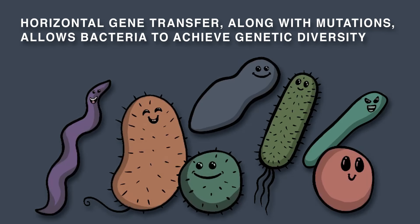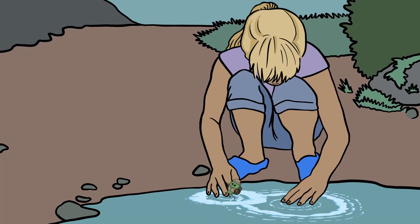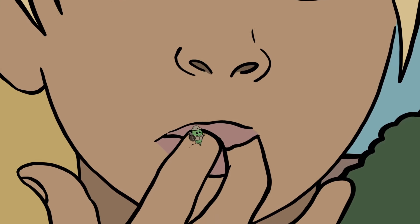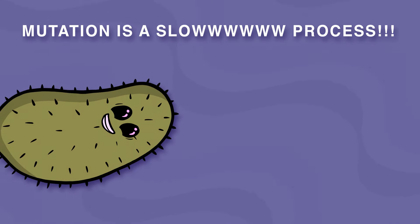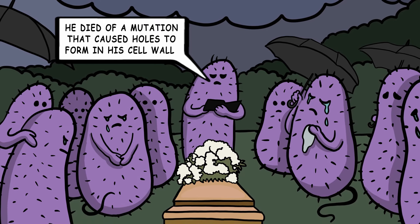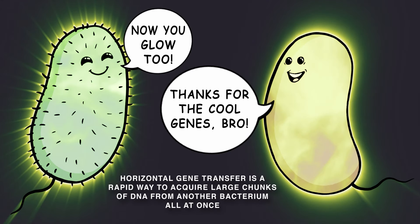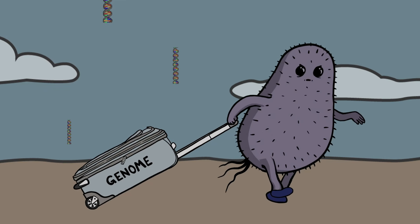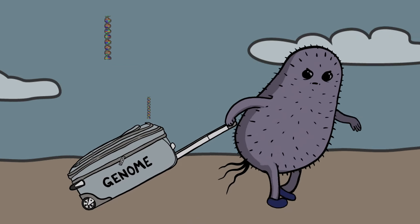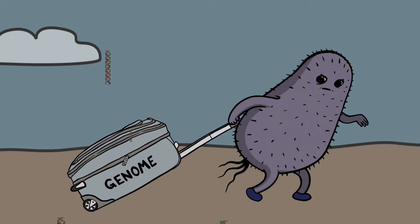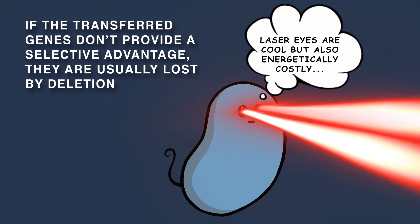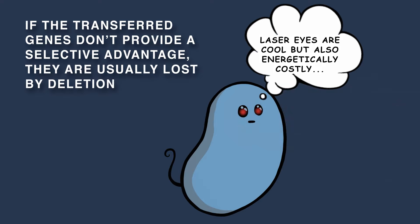Horizontal gene transfer, along with mutations, allows bacteria to achieve genetic diversity. These processes allow bacteria to adapt to new environments because they enable them to respond to selective pressures. Mutation is a slow process, and most mutations are harmful or neutral, not beneficial to the bacterium. Meanwhile, horizontal gene transfer is a rapid way to acquire large chunks of DNA from another bacterium all at once. So if bacteria keep acquiring new snippets of DNA from other bacteria, do their genomes keep getting larger and larger? No. If the transferred genes don't provide a selective advantage, they are usually lost by deletion, so the genome size remains constant over time.